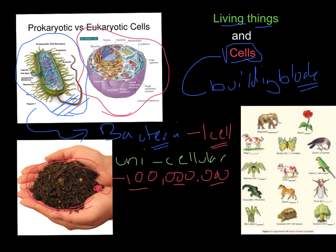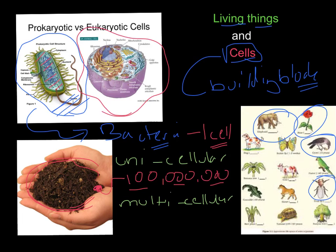We also have bigger creatures, and these bigger creatures we call multicellular. Multi means many, so in this case they are made up of more than just one cell — they have more than one cell working together. Examples of these would be the elephant, the flower, the bird, the insect, or the cow. Things that you would think of as living would be multicellular. For example, the human would be multicellular and it would be made up of about 70 trillion cells.